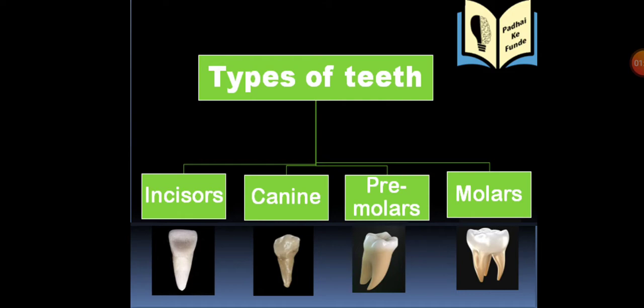The second type is canines. Canines have a sharp, pointy surface for tearing food. Whenever we need to tear something which is too sticky, we use canines for that.